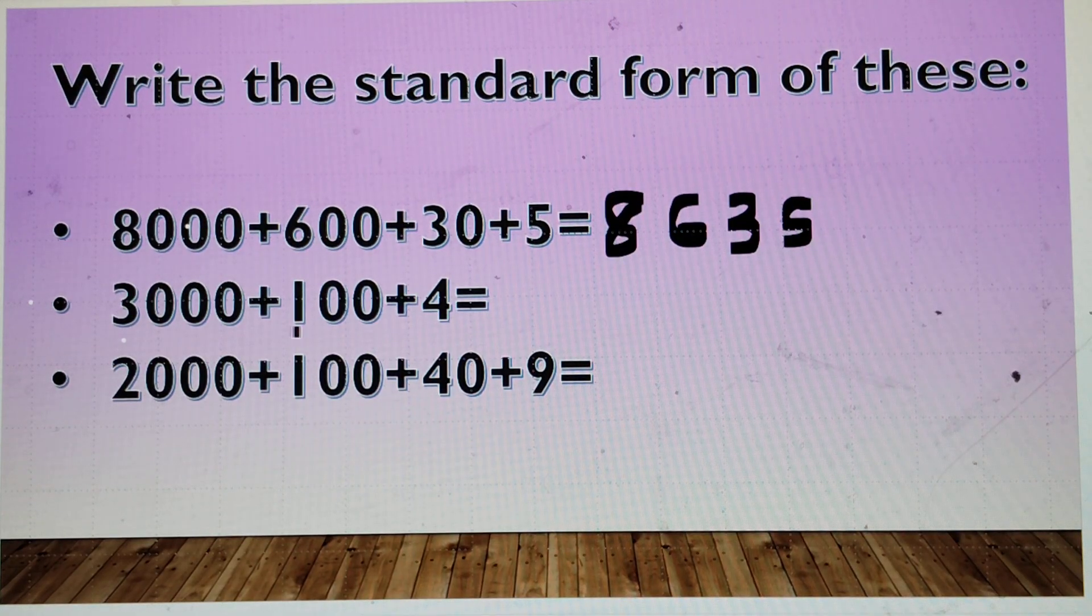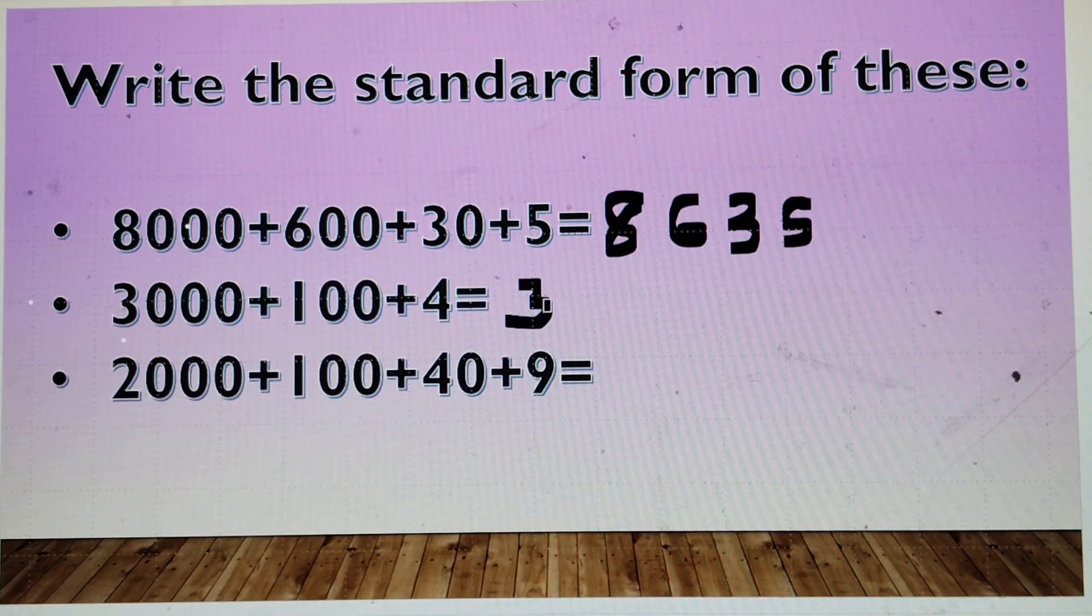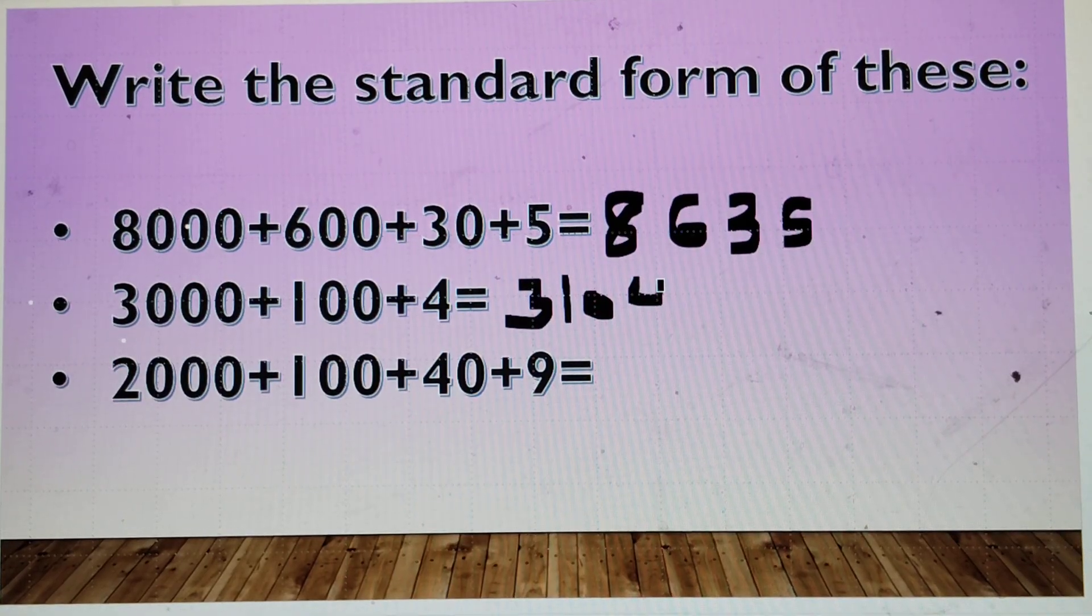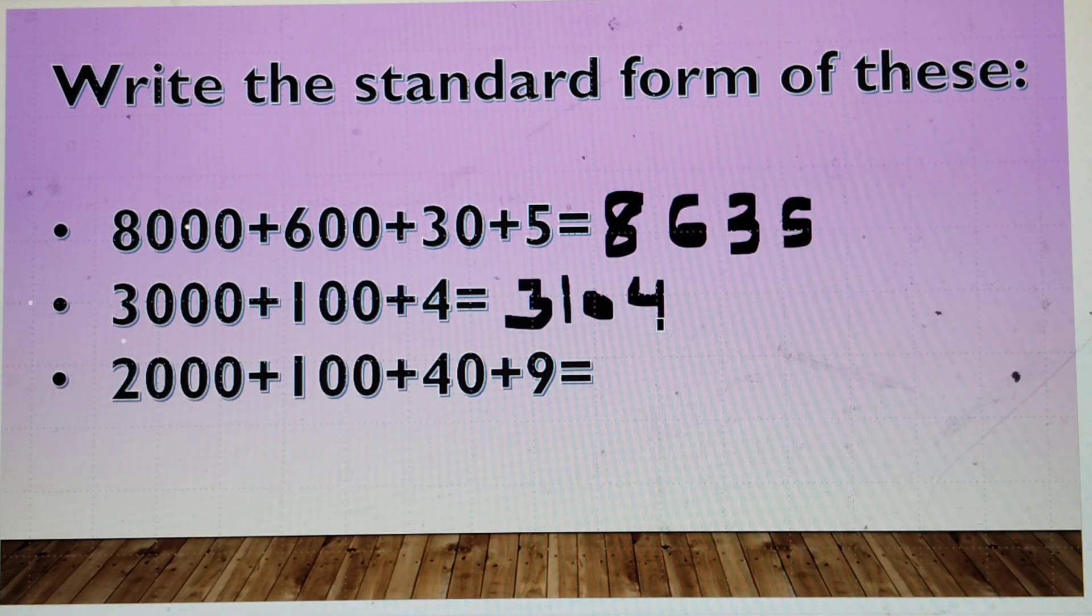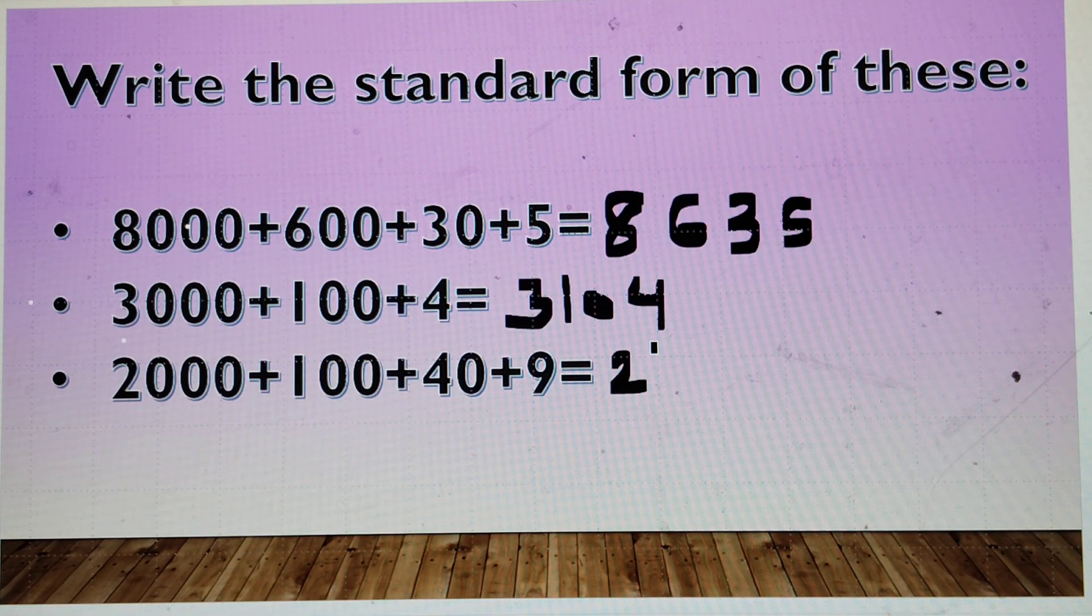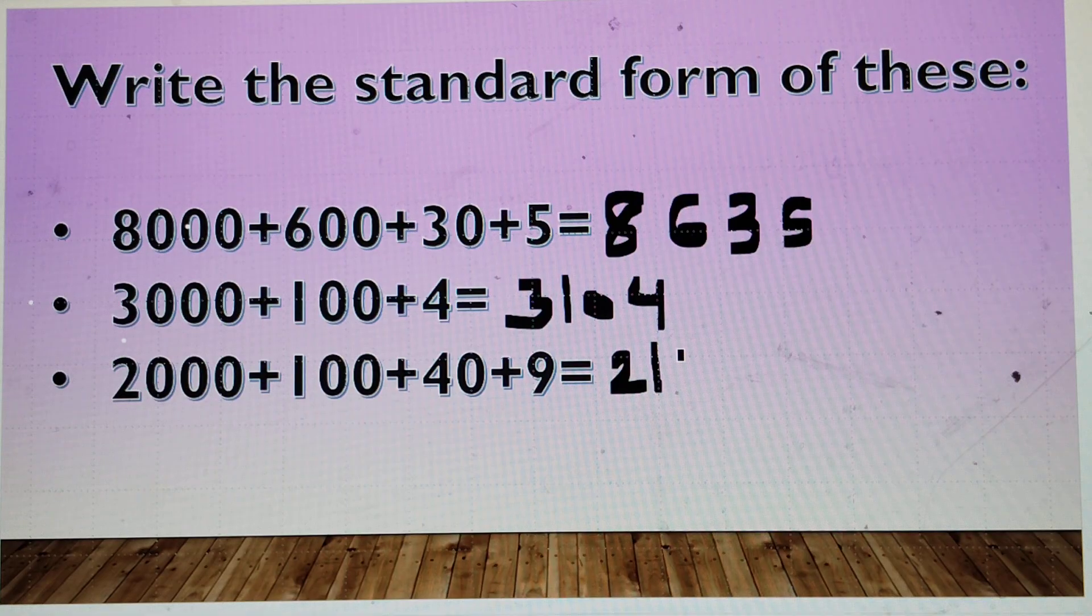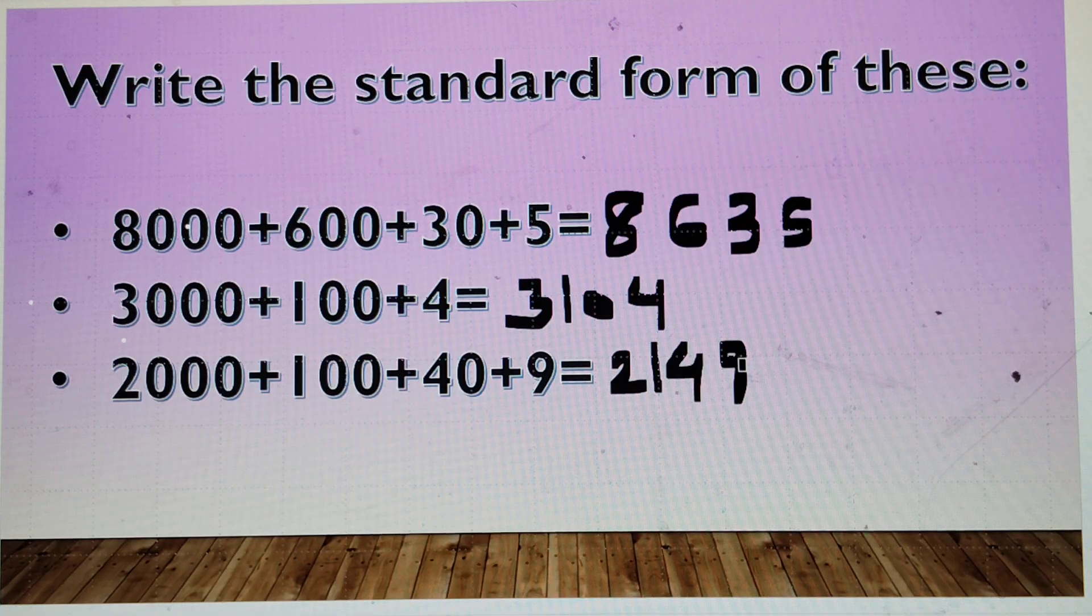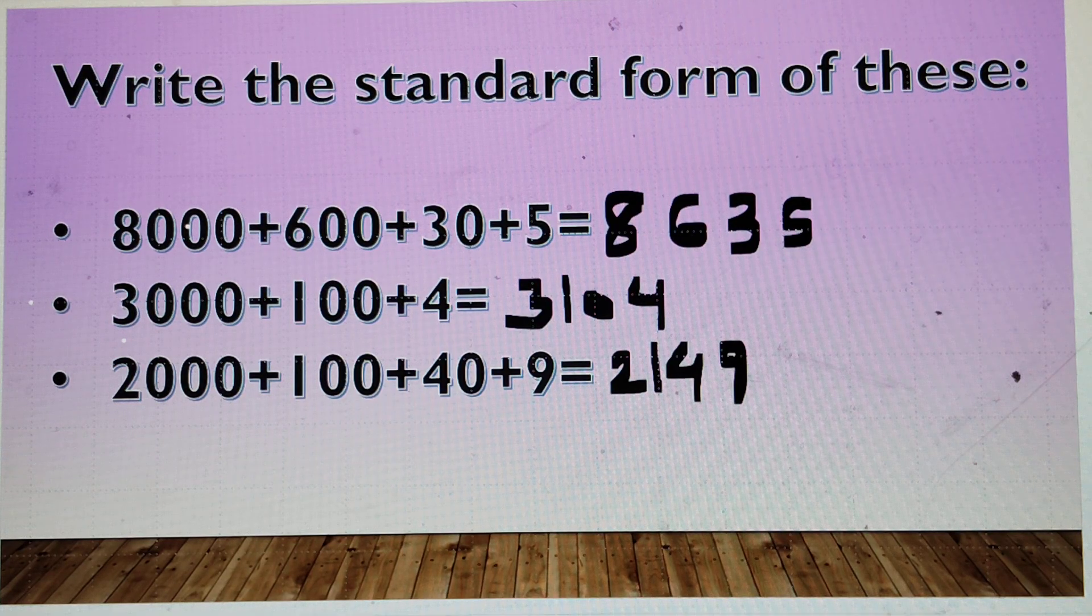Now, this is 3,104. You would write it like 3,104 is the right number. 2,149. 2,149. This is the right way to write it.